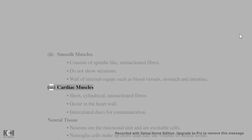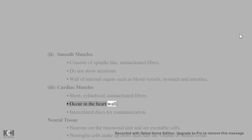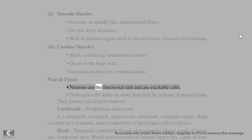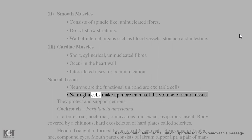Cardiac muscle consists of short, cylindrical, uninucleated fibers occurring in the heart wall, with intercalated discs for communication. Neural tissue: neurons are the functional unit and are excitable cells. Neuroglia cells make up more than half the volume of neural tissue and protect and support neurons.